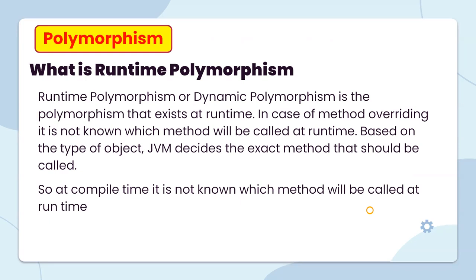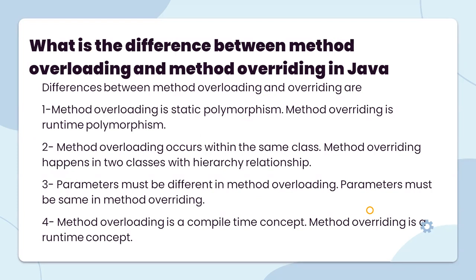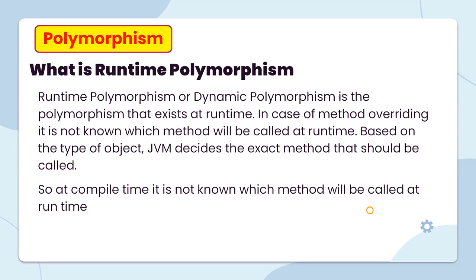What is runtime polymorphism? Runtime polymorphism is essentially method overriding. Runtime polymorphism, or dynamic polymorphism, is the polymorphism that exists at runtime. In the case of method overriding, it is not known at compile time which method will be called; it is determined at runtime based on the type of object. JVM decides the exact method that should be called.